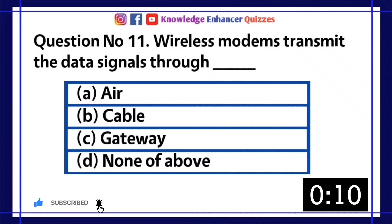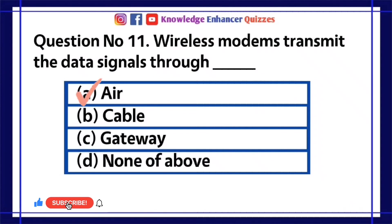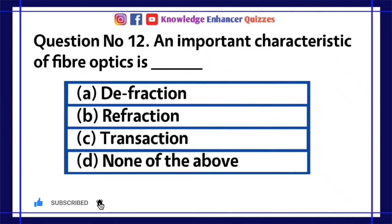Question number 11: Wireless modems transmit the data signals through dash. A. Air. B. Cable. C. Gateway. D. None of above. Option A is the right answer.